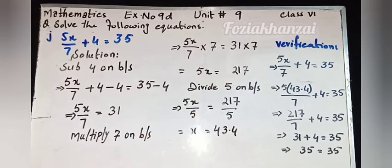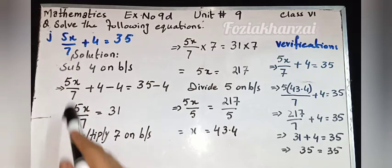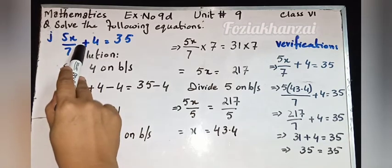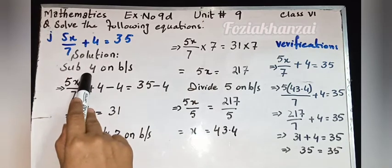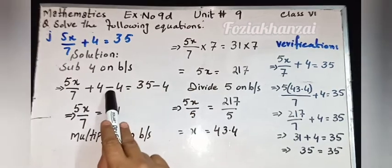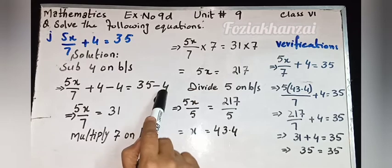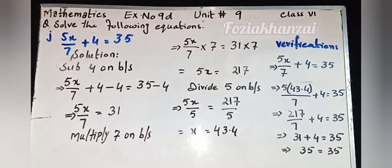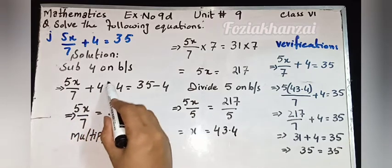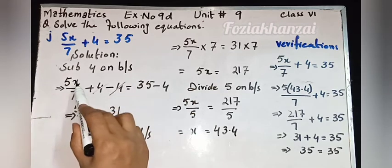Three properties are given: additive property, multiplicative property, and division property. We will apply the opposite property. Since additive property is given, we will apply subtractive property — subtract 4 on both sides. Before the equal sign minus 4, and after the equal sign minus 4. Plus and minus cancel.